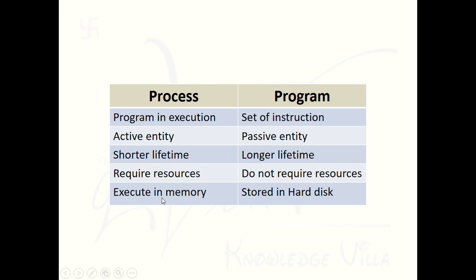A process executes inside the memory — as we have seen, a process works in the text portion, data portion, heap portion, and stack portion. Processes execute inside the memory, whereas a program is stored in the hard disk — it is located in secondary memory, while a process is located in primary memory. This is all about the process and program. Hope you understood well. Thanks for watching Devarat Knowledge Villa.